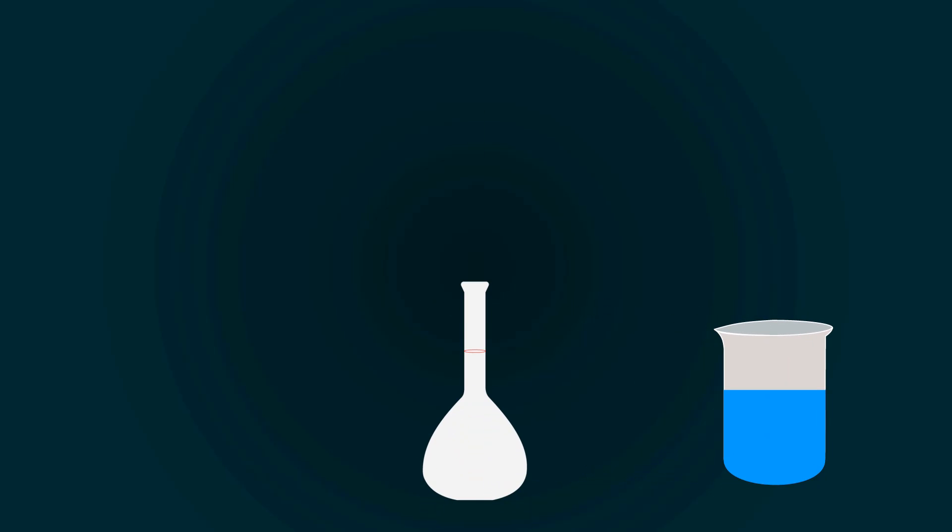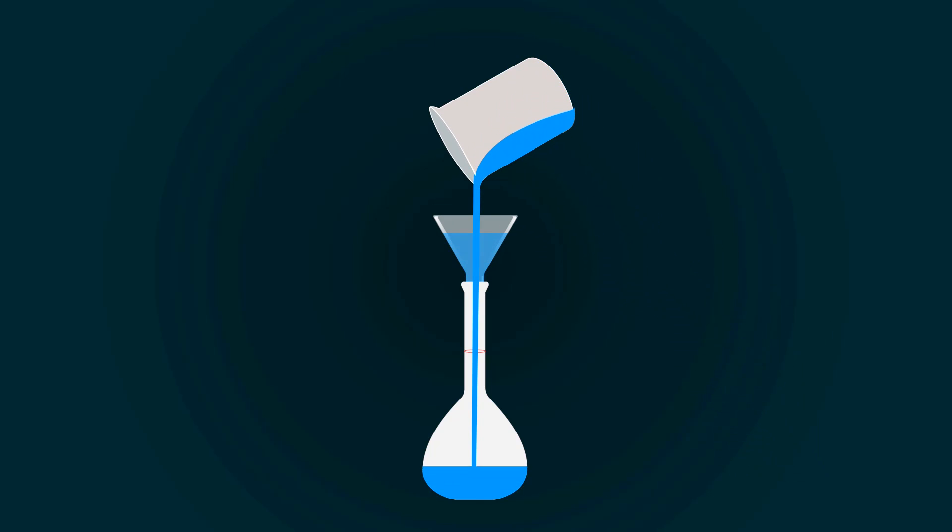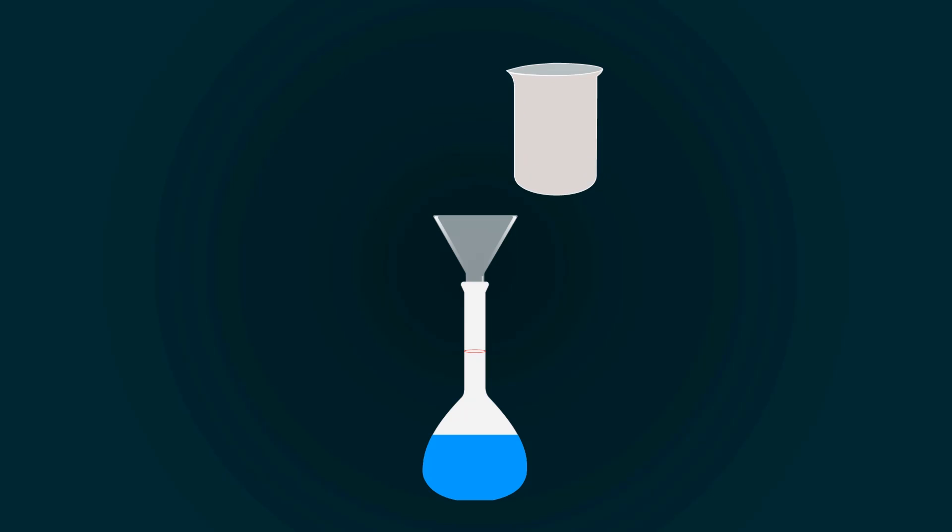Take a 1000 milliliters volumetric flask. Now pour all the solution into the volumetric flask with the help of the funnel. You have to fill the volumetric flask up to the 1000 milliliters mark, for that you have to add more distilled water.